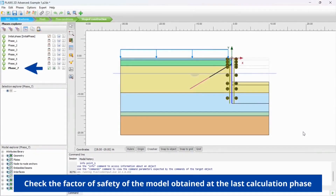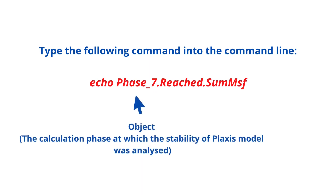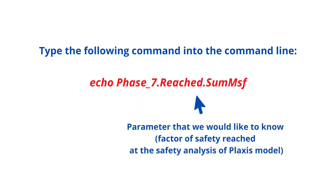Example 5: Check the factor of safety of the model obtained at the last calculation phase. Type the following command into the command line: ECHO Phase 7 dot Reached dot SumMSF. Phase 7 is an object — the calculation phase at which the stability of the Plaxis model was analyzed. Reached SumMSF is the parameter that we would like to know: the factor of safety reached at the safety analysis of the Plaxis model.